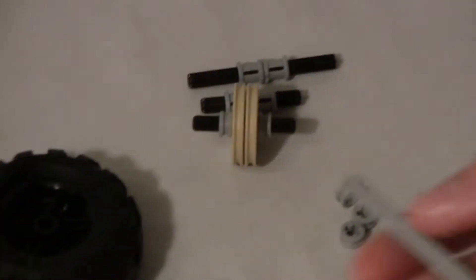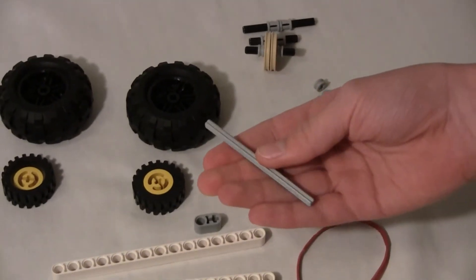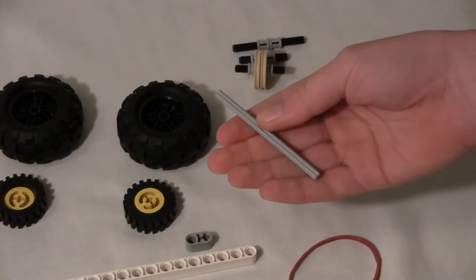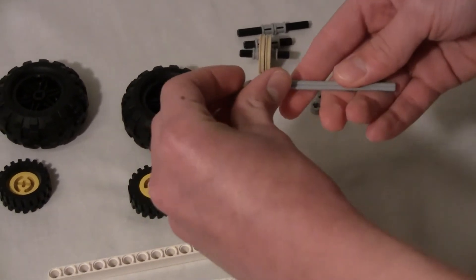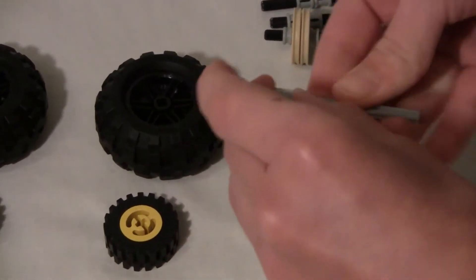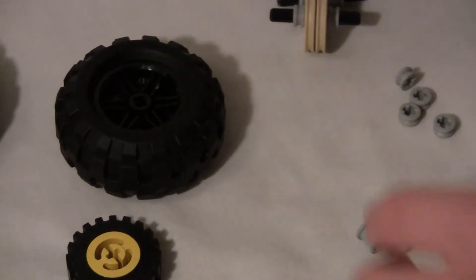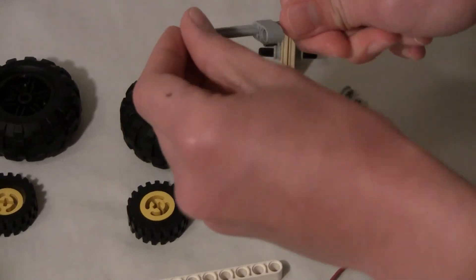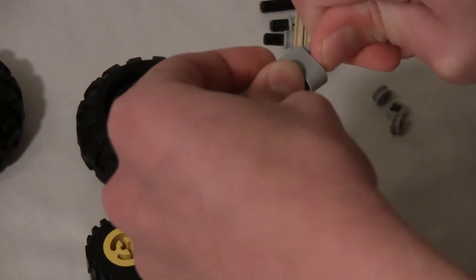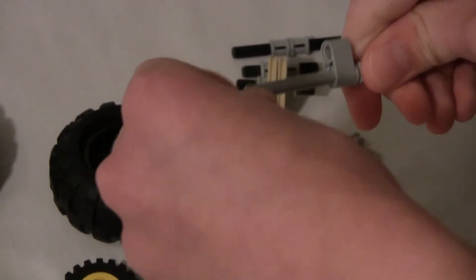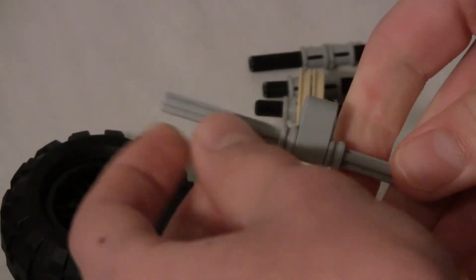And for the last rod that goes in the middle, you need this 9 stud long axle. Stick this on it, and slide it as close to the middle as you can get it. Like that. And put a half bushing on either side. Like this.